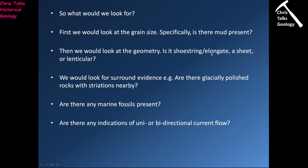Then we look at the geometry. Do we have a shoestring geometry? That would suggest a river, like a braided river system. Or do we have a sheet geometry? That might be expected in a beach setting. We'd also look for evidence in the surrounding rocks — for instance, are there any glacially polished rocks or glacial striations? If so, that increases the chance this is a glacial deposit. We would also check for any marine fossils, because if organisms lived in a saltwater environment, that increases the chance we're looking at a beach deposit versus a braided river. And we'd look for indications of uni- or bidirectional current flow, since a river sediment will show unidirectional flow, a beach will show bidirectional flow from waves, and a glacier will produce a massive, structureless body of sediment.